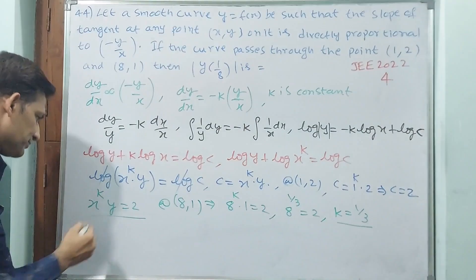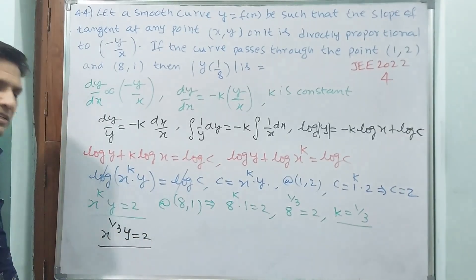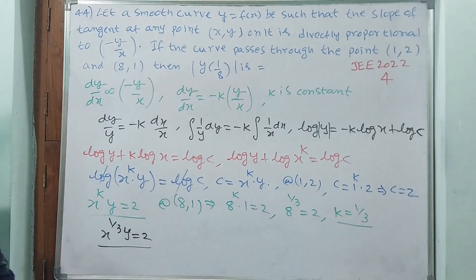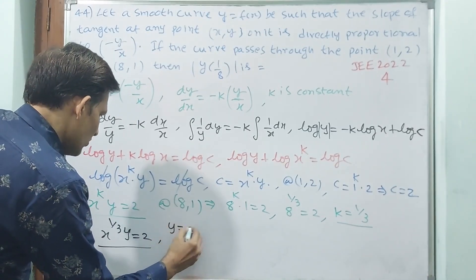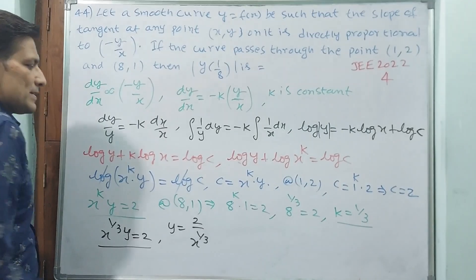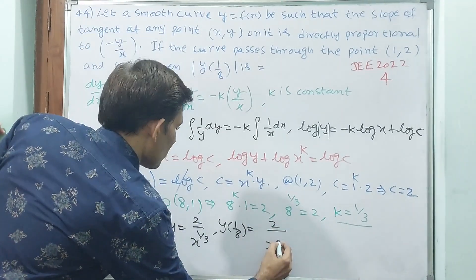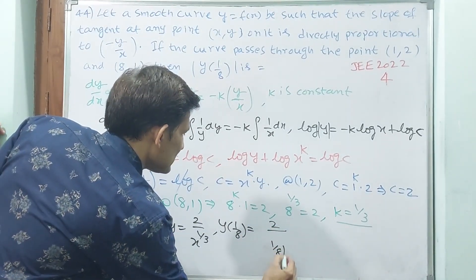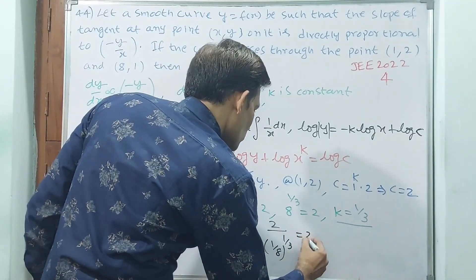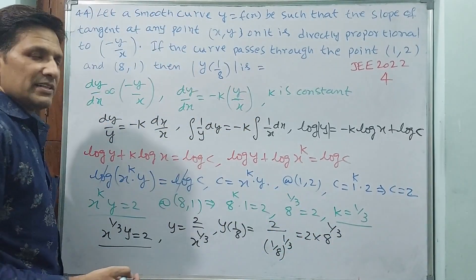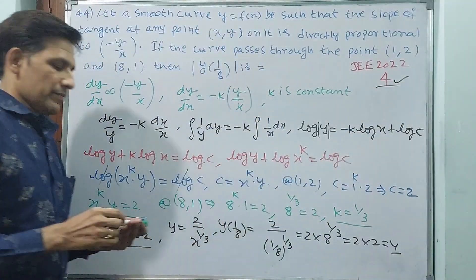Again, write this equation: x to the power 1/3 into y is equal to 2. Now this is the final equation. Now you can do any x and y. y(1/8) - y is equal to 2 by x to the power 1/3. Now you have to find y(1/8) is equal to 2 by (1/8) to the power 1/3. See, the denominator, that is equal to 2 into 8 to the power 1/3. 2 into 2, that's all. 2 into 2 is equal to 4.